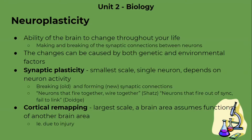The two types of neuroplasticity that we will be talking about are synaptic plasticity and cortical remapping. Synaptic plasticity is the smallest scale — this could be in a single neuron — and it also depends on neuron activity. Synaptic plasticity is the breaking of old synaptic connections and the forming of new synaptic connections.